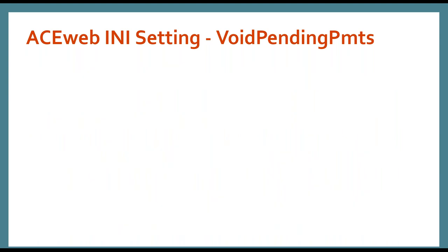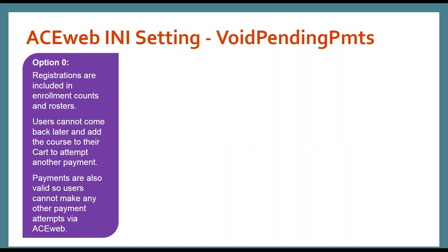Let's look at what that actually means. For option zero, ACEweb isn't really doing anything — this is kind of worst case scenario. If you've got a credit card payment gateway and your void pending payment is set to zero, you're going to have a lot of extra work to do. The registration is going to be included in the enrollment count, so they're taking up a seat in the class. The user can't go back on ACEweb and try to add the course again because they have an active registration, and because the payment is also valid they can't go to their history and pay via the pay balances online option. So if a student wants to correct this themselves, it's not going to work — they're going to have to call the office.